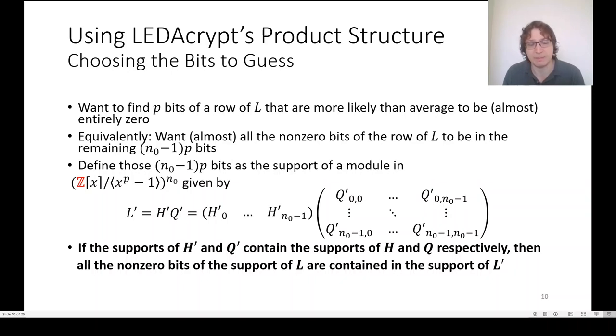We can think of this set as the support of a polynomial that we've designed to mirror the structure of the polynomials that make up the private key of LEDAcrypt. We generate an H prime with the same structure as H, a Q prime with the same structure of Q. We have them be less sparse, we have them over the integers, but then we multiply just like we multiply to get L, so we have this L prime. And if the support of H prime contains the support of H, the support of Q prime contains the support of Q, then the support of L will be contained in the support of L prime. And we can use the complement of that support as an information set and recover the key.